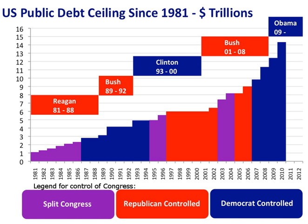Depending on who is doing the research, it is said that the U.S. has raised its debt ceiling at least 90 times in the 20th century. The debt ceiling was raised 74 times from March 1962 to May 2011, including 18 times under Ronald Reagan, 8 times under Bill Clinton, 7 times under George W. Bush, and 5 times under Barack Obama.